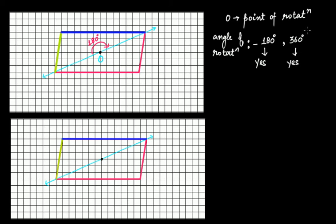This 360 degrees is actually true for every figure. When you have rotated by 360 degrees around the point of rotation, you are getting the same figure — these two figures are exactly the same. This is true for every figure regardless of what kind of object you have, because one complete rotation will bring that object back to its initial position. That is why we say 360 degrees is true for every figure.